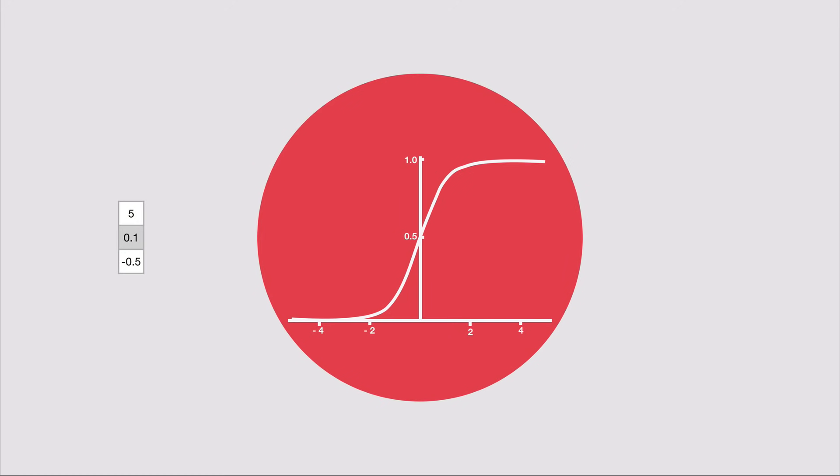The gates learn what information is relevant to keep or forget during training. Gates contain sigmoid activations. A sigmoid activation is similar to the tanh. Instead of squishing values between negative one and one, it squishes values between zero and one. That is helpful to update or forget data because any number getting multiplied by zero is zero, causing values to disappear or be forgotten. Any number multiplied by one is the same value, therefore that value stays the same or is kept. The network can learn what data should be forgotten or what data is important to keep.